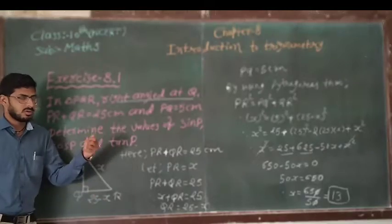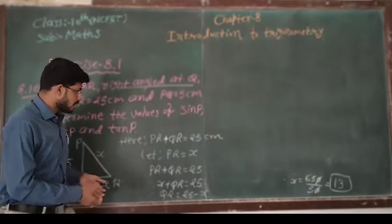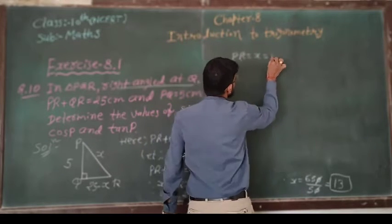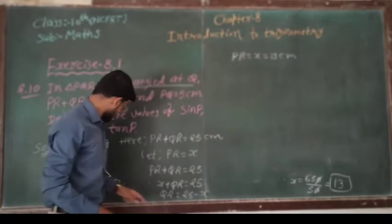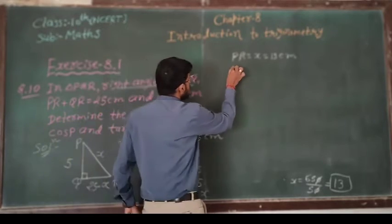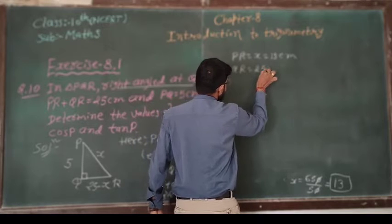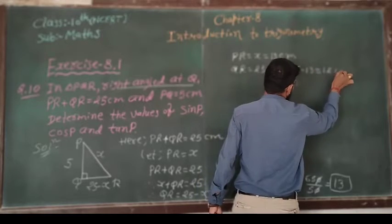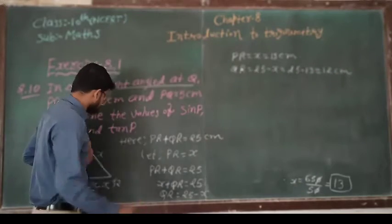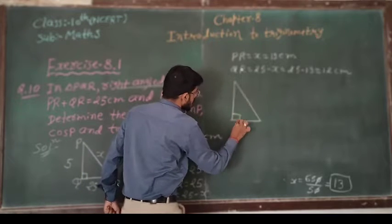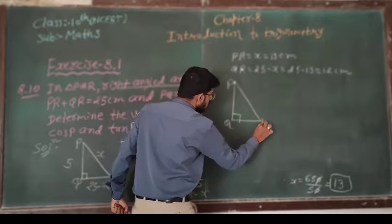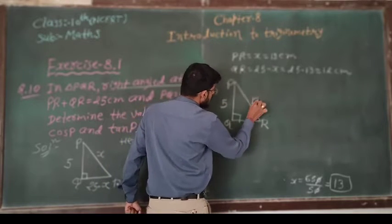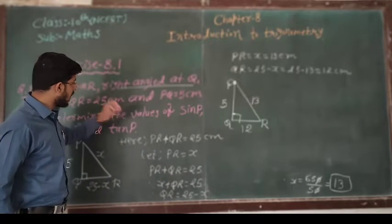Is it clear? So write, PR is equal to x and the value of x is 13, so 13 cm. Now QR is equal to 25 minus x, so 25 minus 13, it gives 12 cm. So we have PQ 5 cm, QR 12 cm and PR 13 cm.